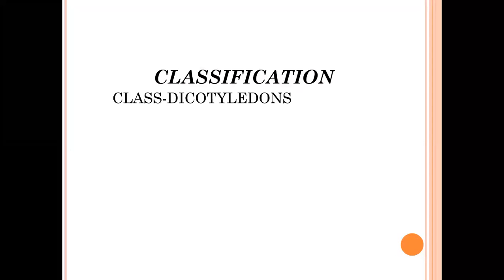Class Dicotyledons. The Dicotyledon characters are: tap root system, reticulate venation of leaves, pentamerous or tetramerous flowers, and embryo or seed containing two cotyledons. These are the Class Dicotyledon characters.